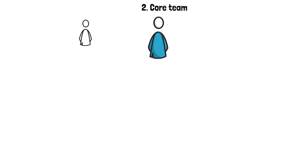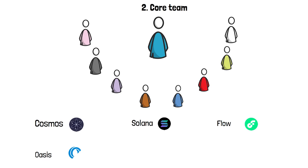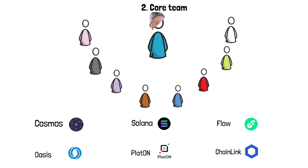The team behind Octopus Network is exceptionally talented and experienced, both in the crypto space and in mainstream software development. With a team of eight engineers, Octopus has worked on grants across layer-one protocols including Cosmos, Solana, Flow, Oasis, Polkadot, and Chainlink. Most notably, they are also active participants and co-organizers of the Rust community in China. Octopus Network's current founder and CEO is Louis Lu.